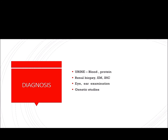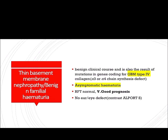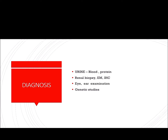For diagnosis, urine examination will show blood and proteinuria. Renal biopsy with electron microscopy will show the typical basket weave pattern. Immunohistochemistry will show negative staining for alpha 3, alpha 4, and alpha 5 collagen antibodies. Eye examination and ear examination can be done to detect those abnormalities, and genetic studies can also be performed.